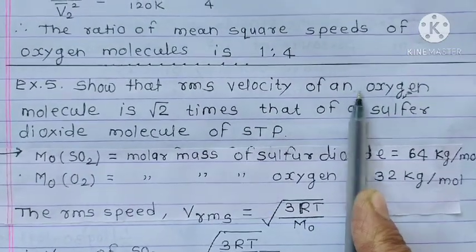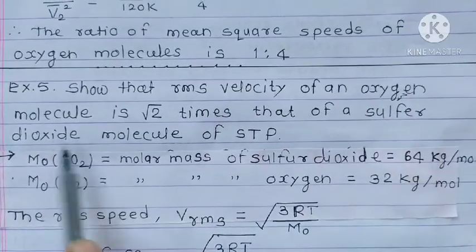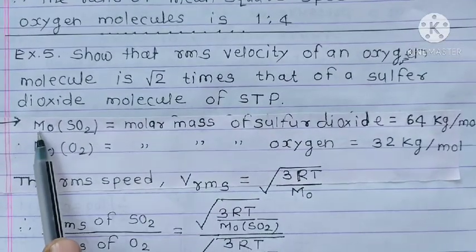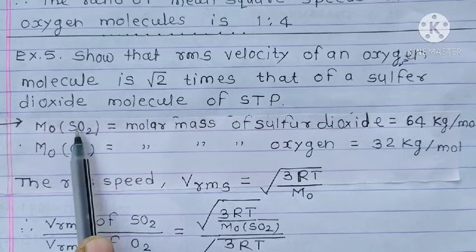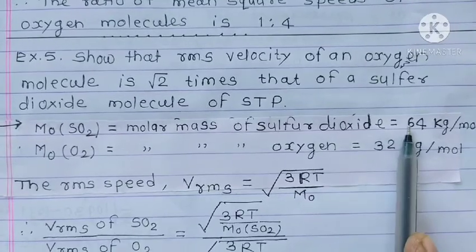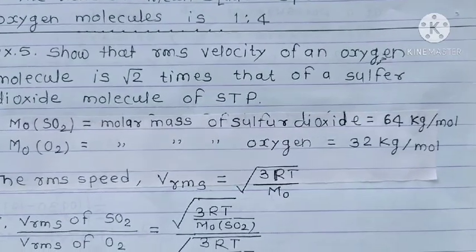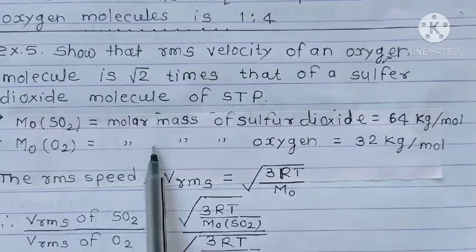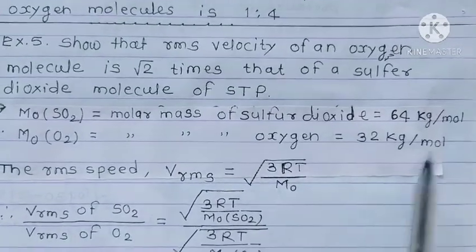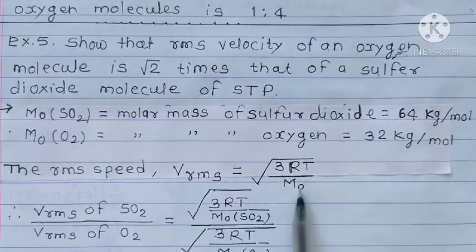Show that RMS velocity of an oxygen molecule is root 2 times that of sulfur dioxide molecule at STP. M0 SO2, that means molar mass of sulfur dioxide, is equal to 64 kg per mole. Similarly, M0 O2, that is molar mass of oxygen, is equal to 32 kg per mole. The RMS speed, Vrms, is equal to under root 3RT upon M0.